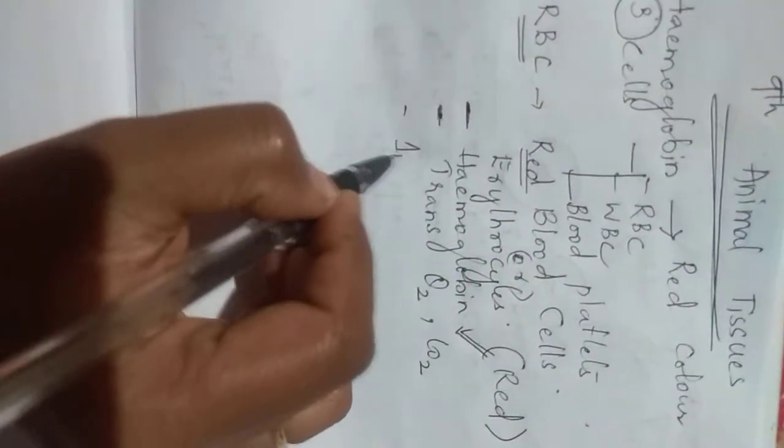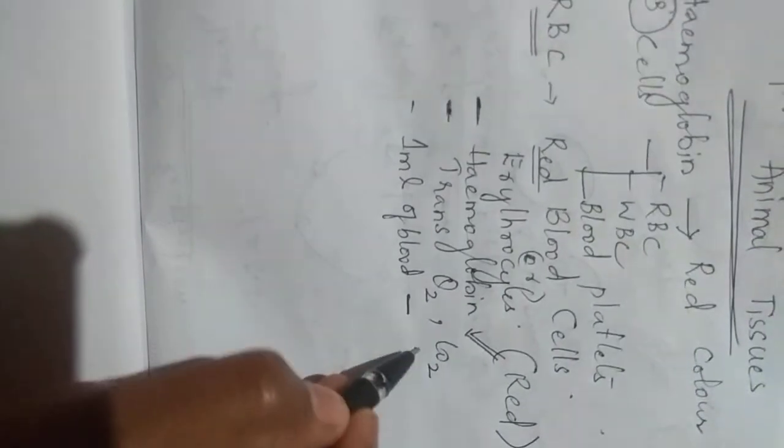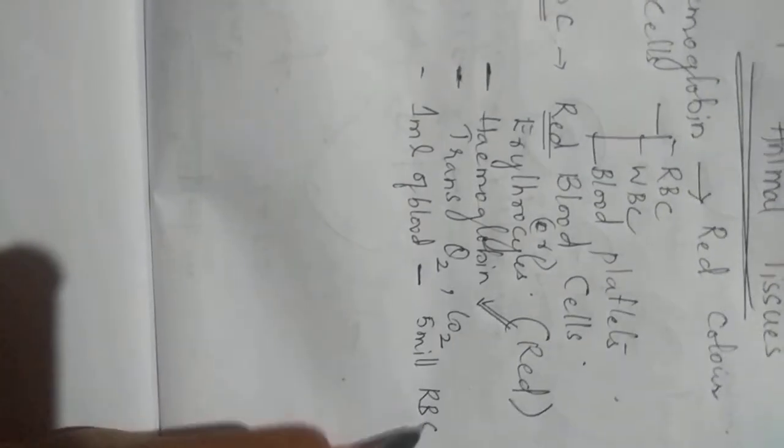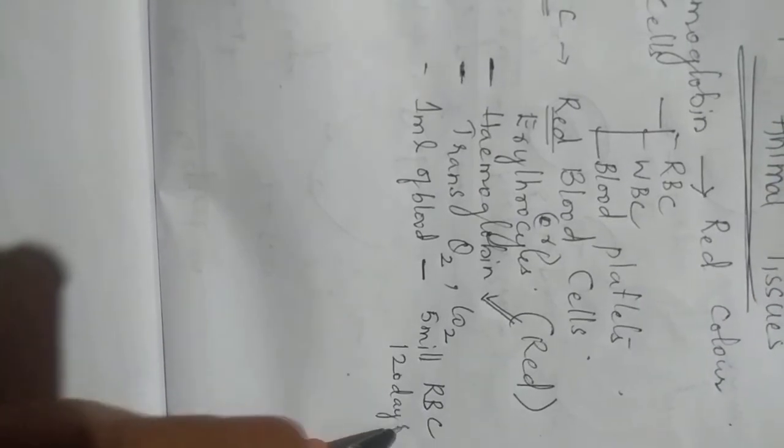One ml of our blood has 5 millions of RBC. And this will live for 120 days. After 120 days they will die and new RBC cells will generate.